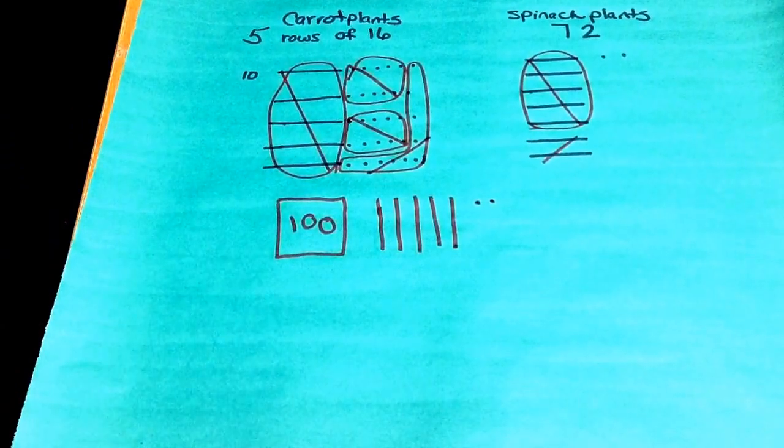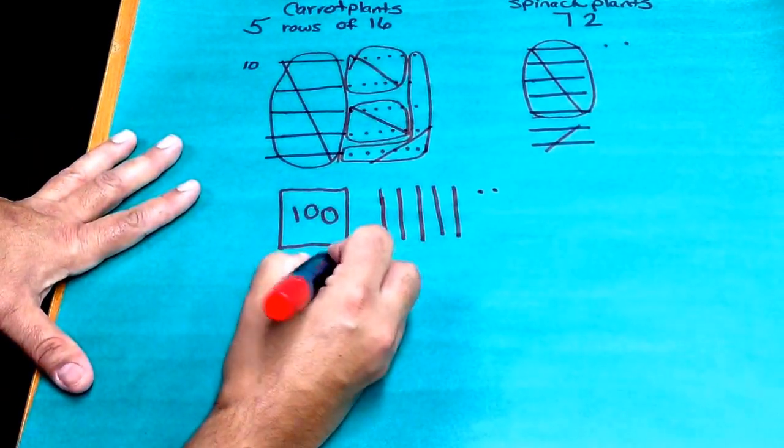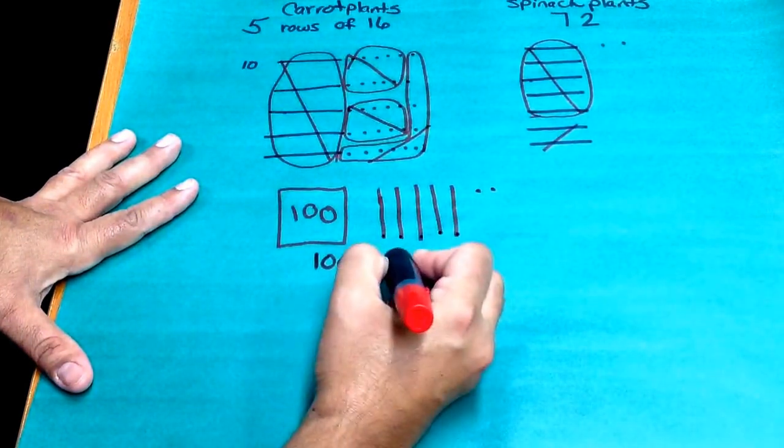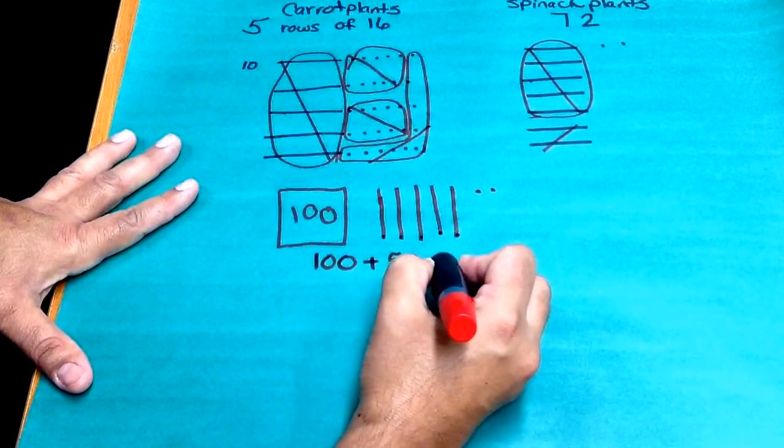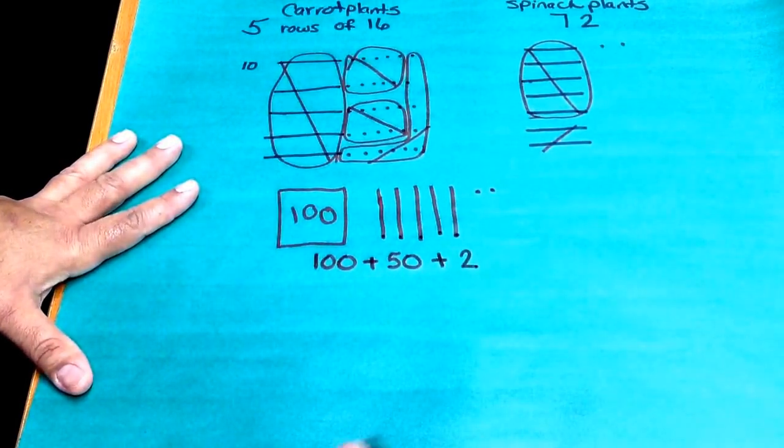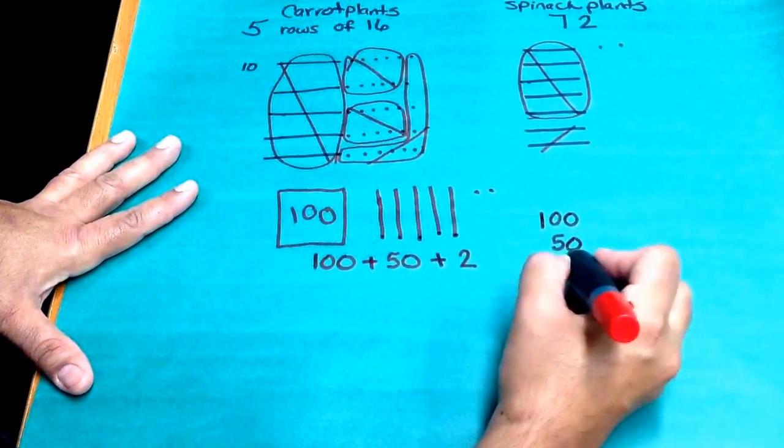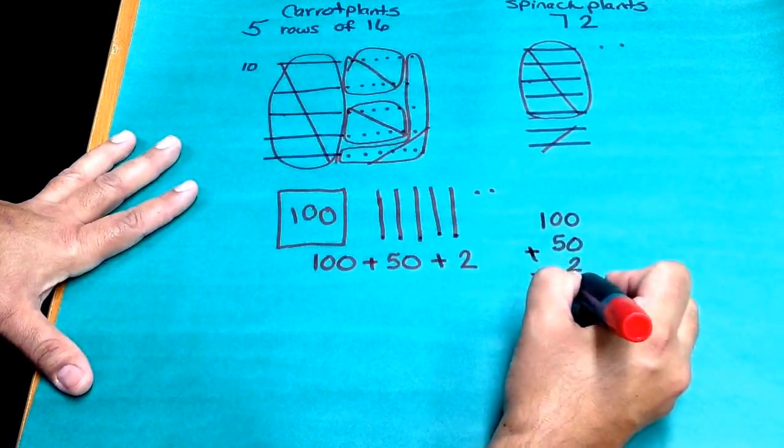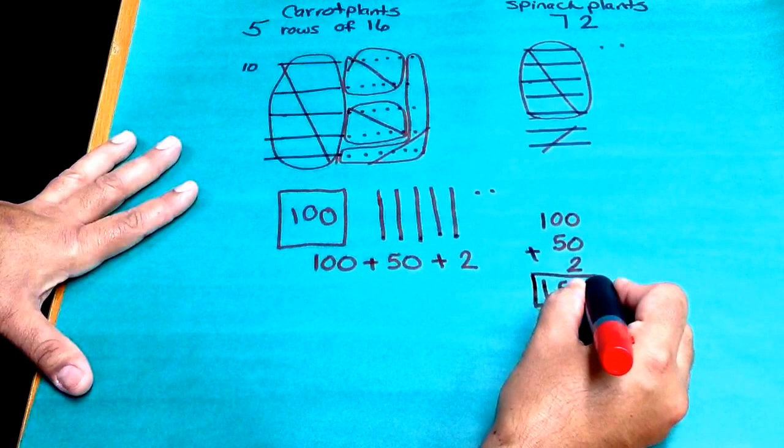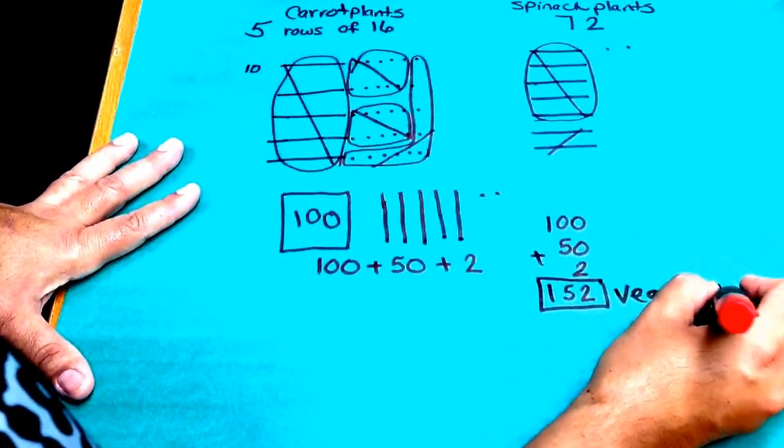So looking at my picture, my pictorial model, I have 100 plus 10, 20, 30, 40, 50 plus two units. Go ahead and do the arithmetic, 100 plus 50 plus two, and we have 152 vegetables in the garden.